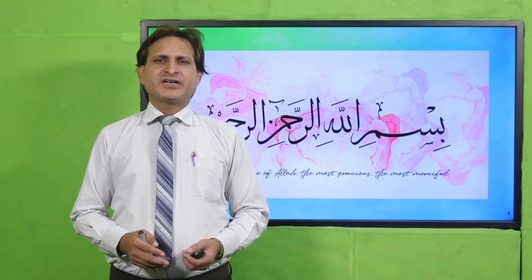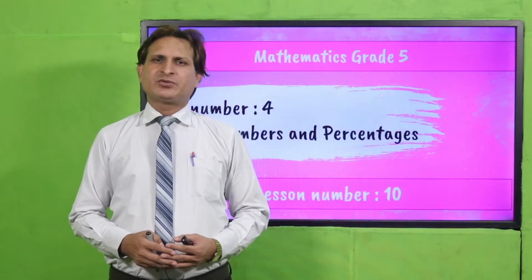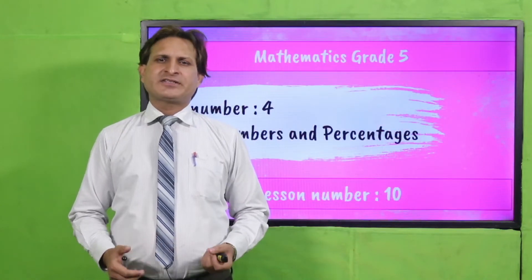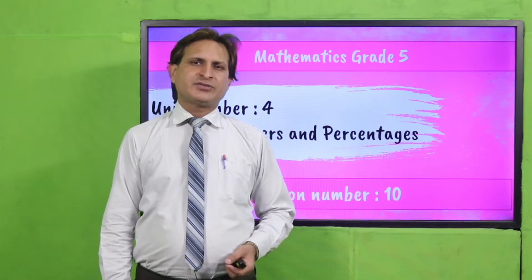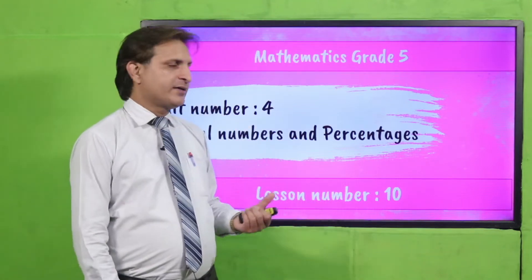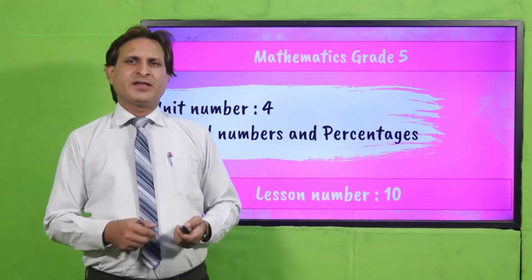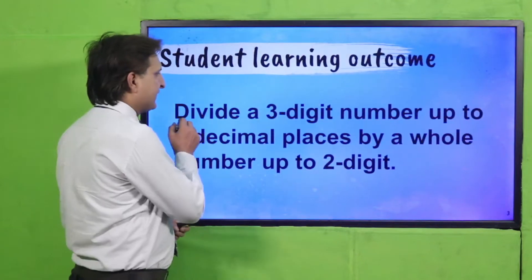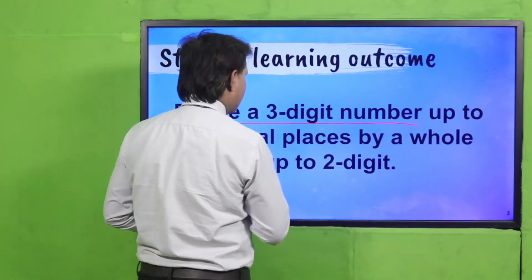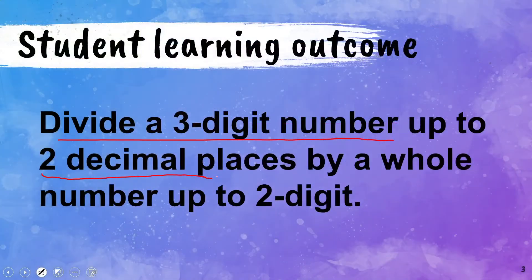Bismillahirrahmanirrahim. Respected teachers and dear students, Assalamualaikum. I am Vakas Ahmad. Today we will discuss Mathematics Grade 5. This is our Unit Number 4 about decimal numbers and percentages. This is our Lesson Number 10. In this lesson we will discuss the SLO: divide a three-digit number up to two decimal places by a whole number up to two digits.